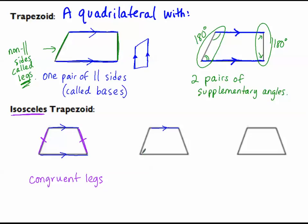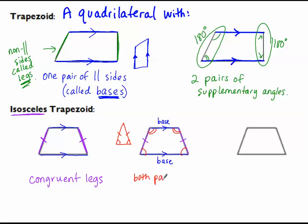Just like a triangle, if there are congruent legs, there are also congruent angles. The two angles that touch each base are called base angles and will be congruent — just like in the isosceles triangle. So both pairs of base angles are congruent. Congruent sides gives us congruent base angles.